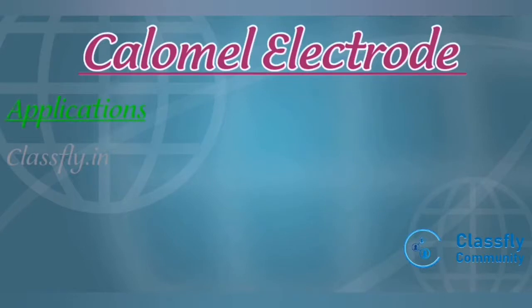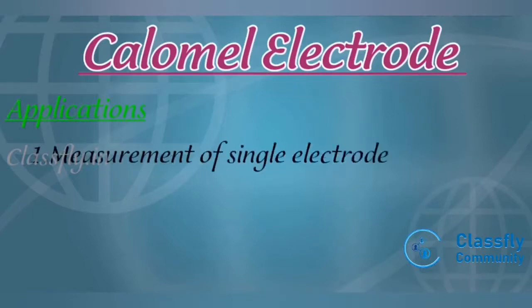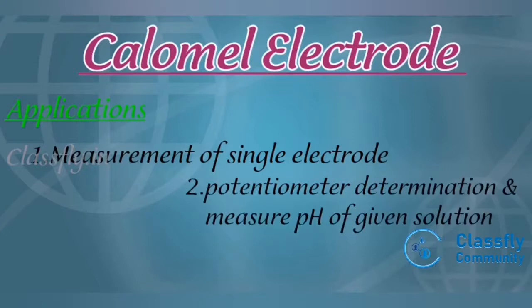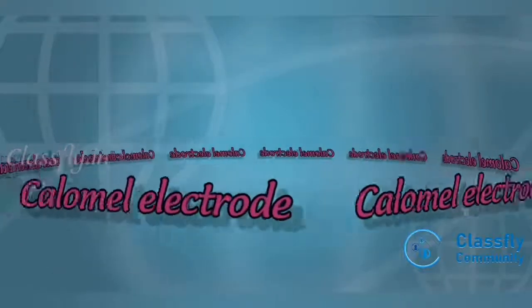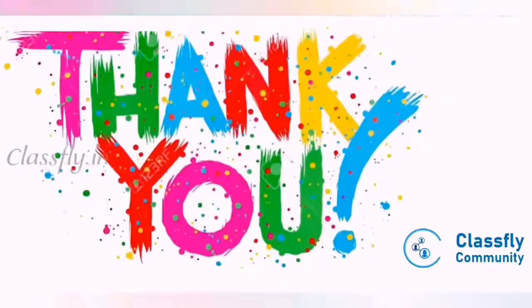The applications of the calomel electrode are: first, it is used as a secondary reference electrode in the measurement of single electrode potentials; second, it is used as a reference electrode in all potentiometric determinations and to measure the pH of a given solution; third, it is used in cyclic voltammetry and general aqueous electrochemistry.